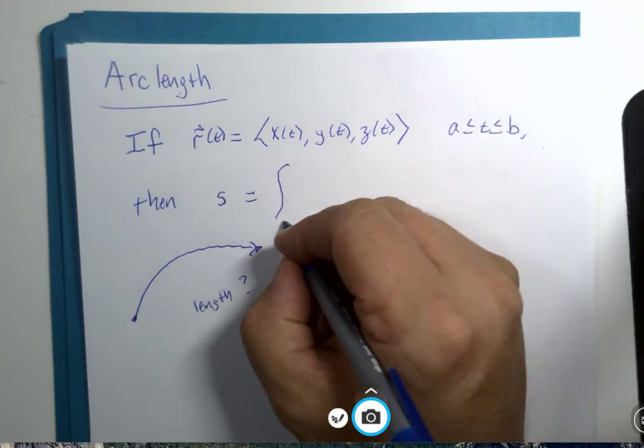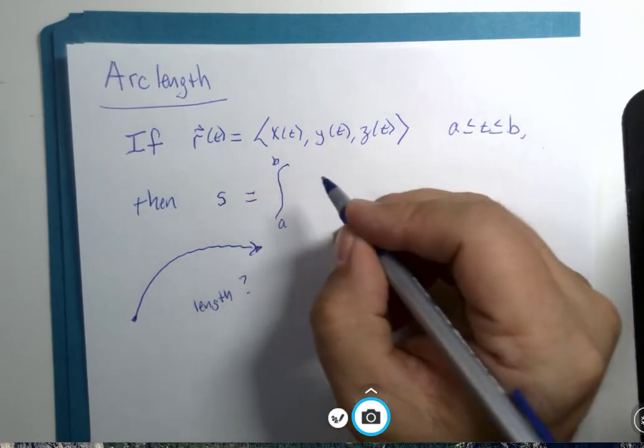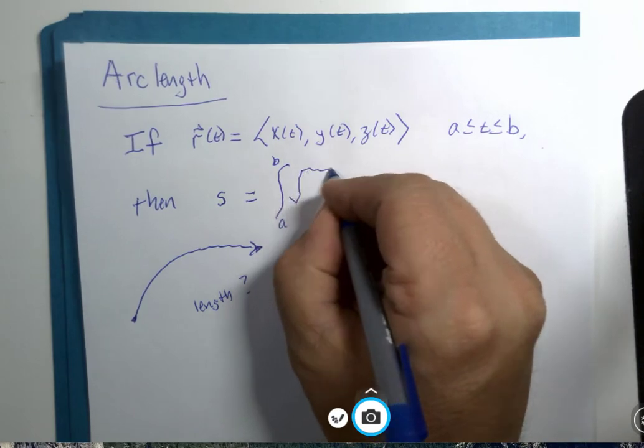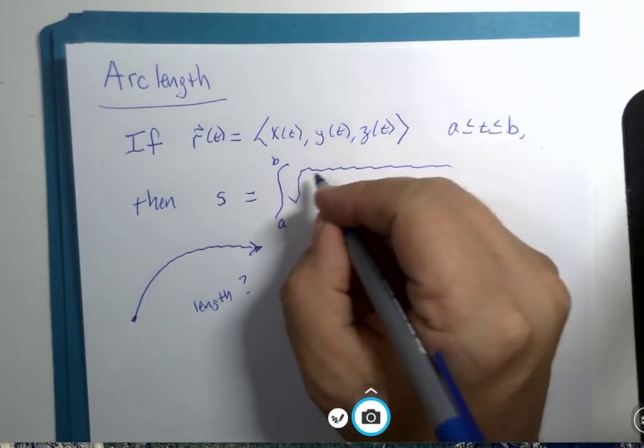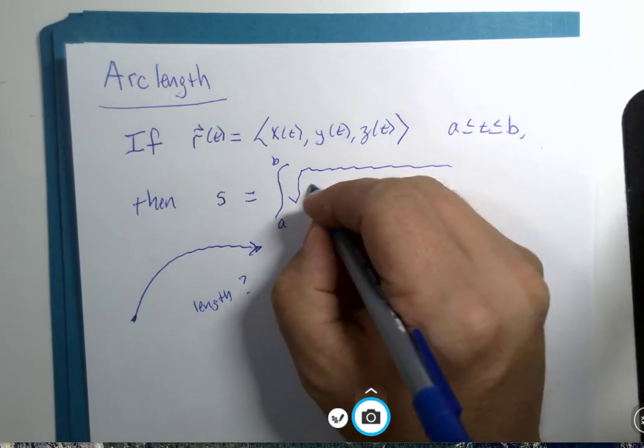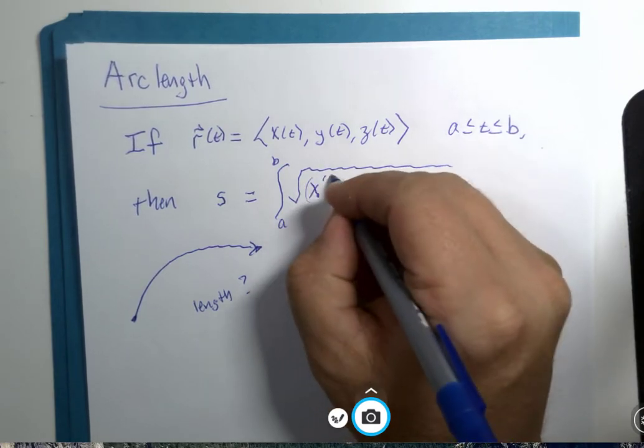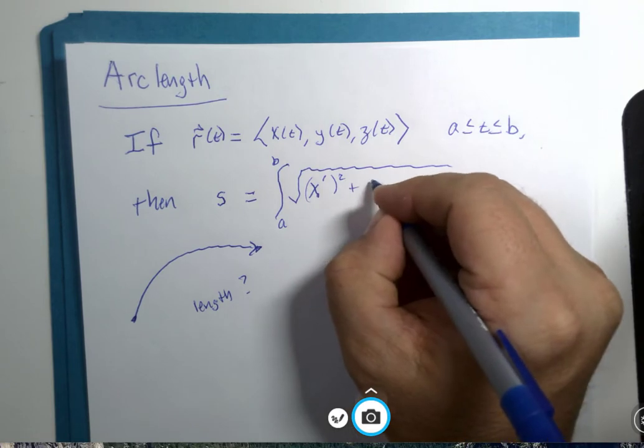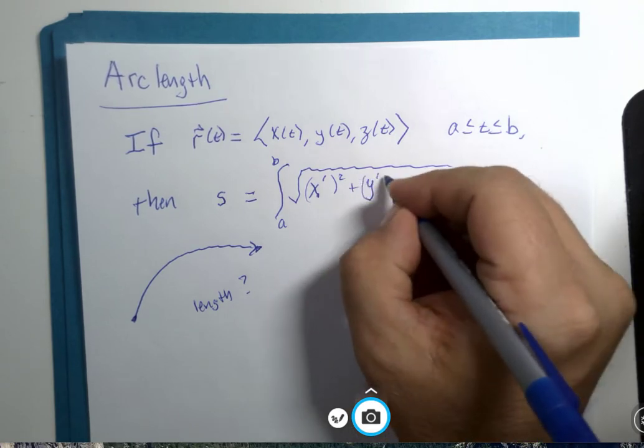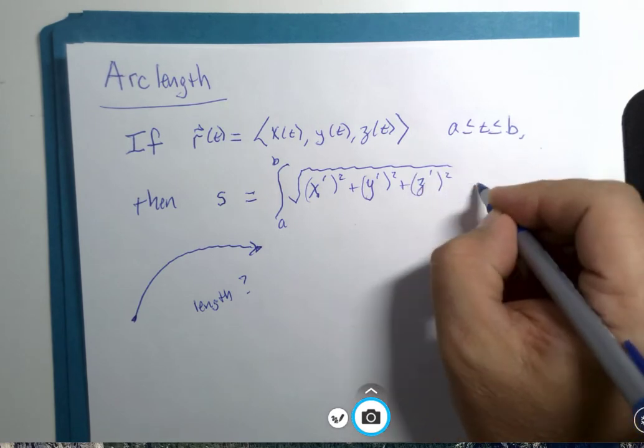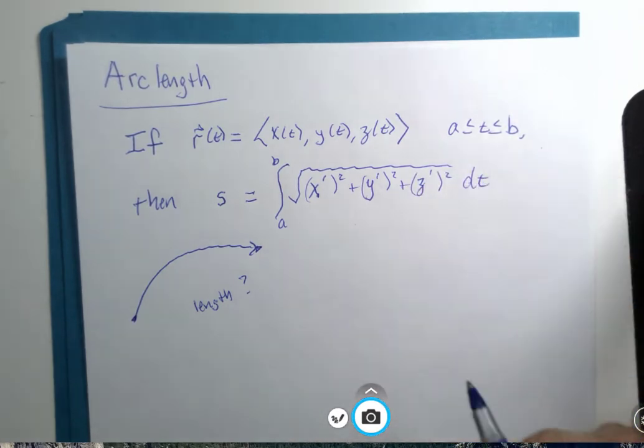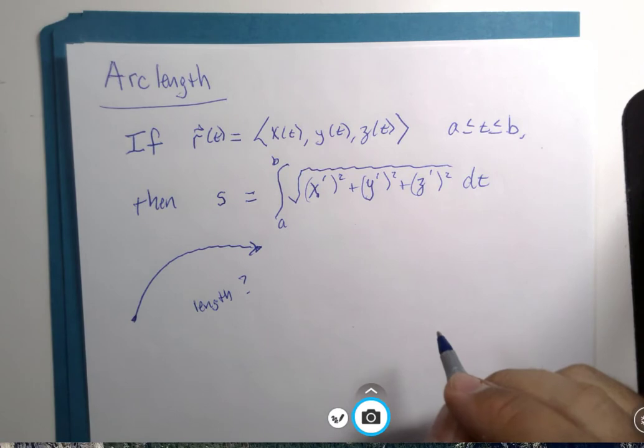It's the definite integral from A to B of a magnitude. There's several ways of writing it. I'm going to write it so it fits best.